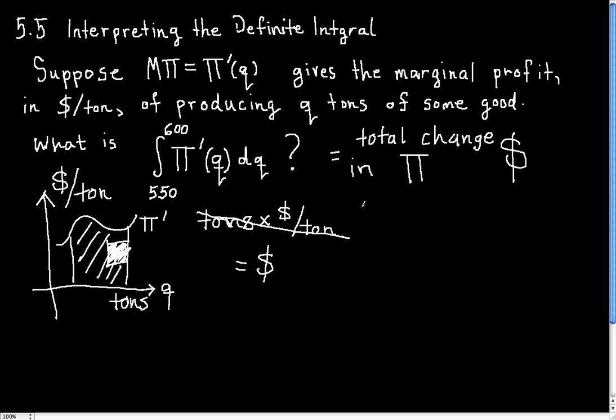And total change from when to when? It's from the lower limit to the upper limit. So from q equals 550 to q equals 200, or sorry, 600 to q equals 600.